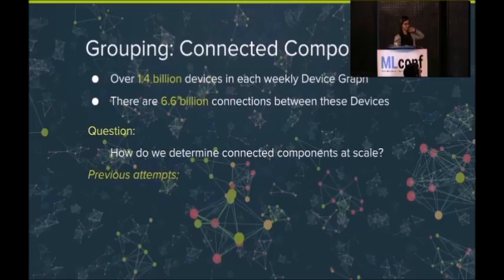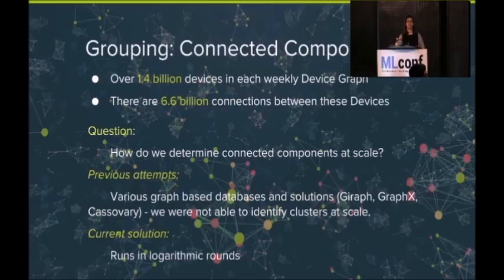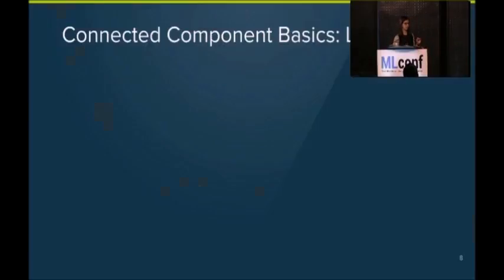So we've made some previous attempts, and they were through various graph-based database-type situations where you're using Giraph, GraphX, Cassovary. And with our limited engineering understanding, we could not get them to work at scale. So we ended up rolling our own. And the current solution actually runs in logarithmic rounds, which is a really big improvement over standard message passing.